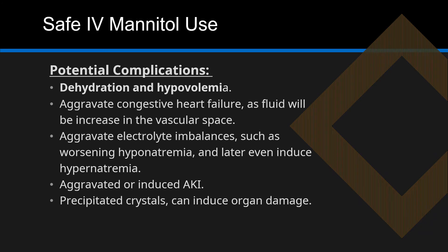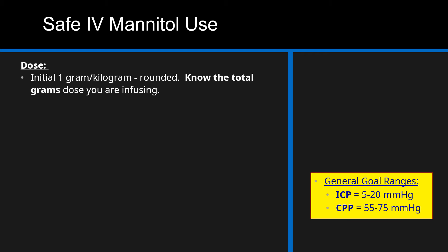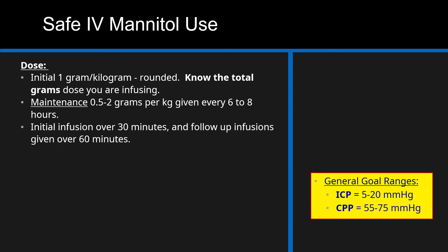Dose. Generally, the initial dose is 1 gram per kilogram, rounded to the nearest multiple of 10. Always know the total grams you are infusing. Maintenance doses are 0.5 to 2 grams per kilogram every 6 to 8 hours. Initial infusion is over 30 minutes, and follow-up infusions are over 60 minutes.